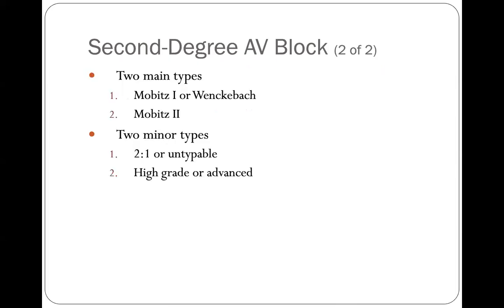The two main types are Mobitz I — often referred to as Wenckebach — and Mobitz II. Second degree heart block type one, second degree heart block Mobitz I, and second degree heart block Wenckebach all mean the same thing. Second degree heart block type two is referred to as Mobitz II. If you just hear 'Mobitz' without a number, it usually refers to type two, since type one is most commonly called Wenckebach.